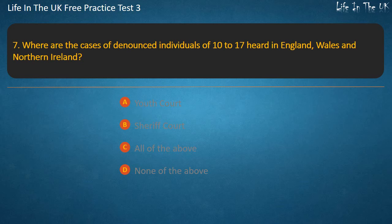Question 7. Where are the cases of denounced individuals aged 10 to 17 heard in England, Wales and Northern Ireland? Youth Court, Sheriff Court, All of the above, or None of the above? Answer: Youth Court.